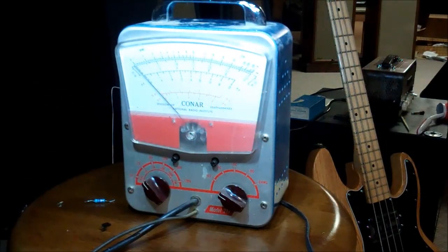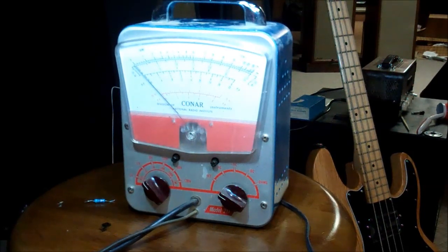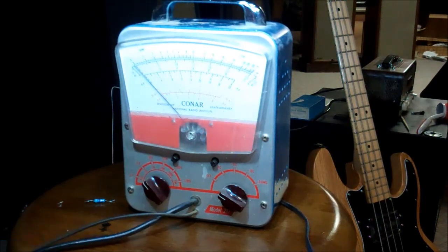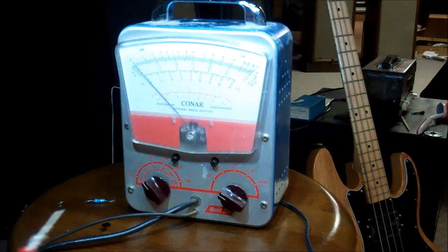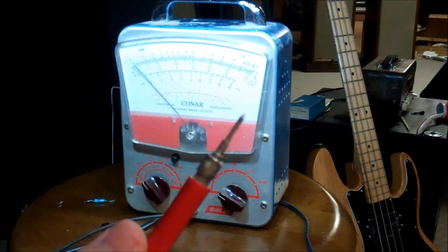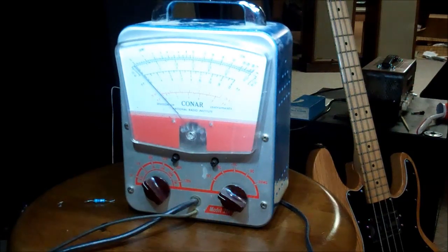Okay, good evening everybody, just a quick check out. This is a thing that came from the auction, still kind of dirty. Trash or treasure? This is a Conar Instruments, National Radio Institute Model 211 voltmeter.